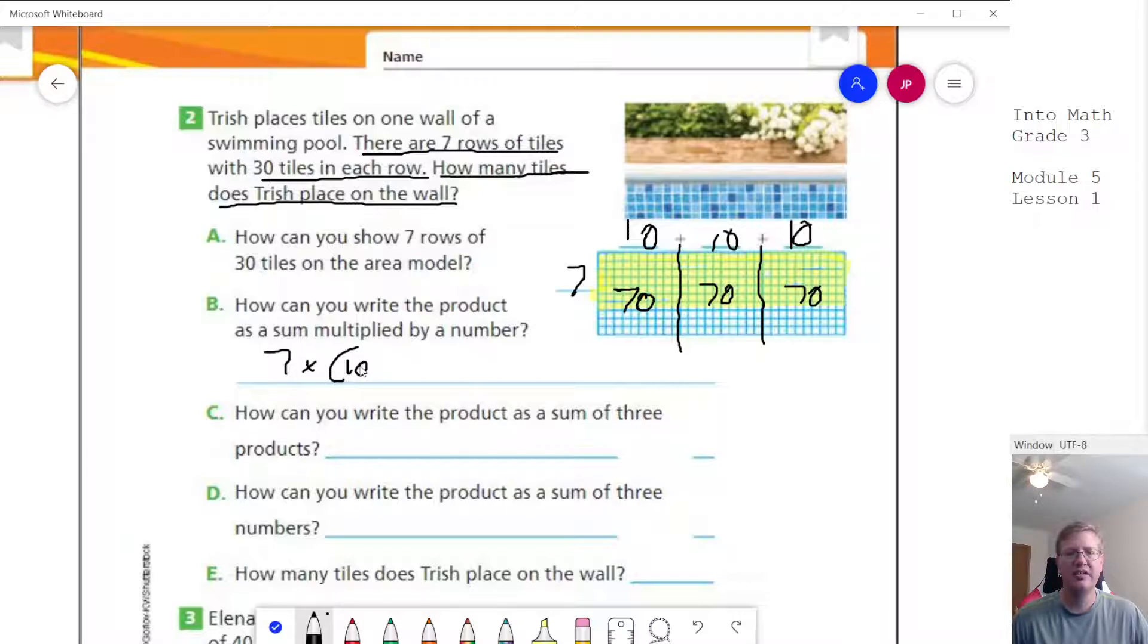So a sum multiplied by a number, we can go ahead and do seven times, and then 10 plus 10 plus 10. And then how can we write it as the sum of three products? It would be this part right here. So 70, or actually, you know what, what they probably want for this is it's going to look like 7 times 10 plus 7 times 10 plus 7 times 10. And that would probably be the most accurate answer for that.